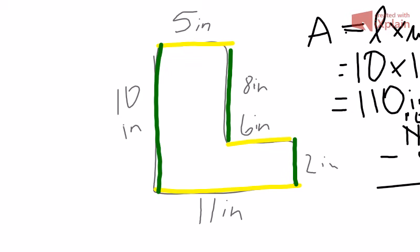Now I'm going to subtract: 10 minus 8 is 2, and 10 minus 4 is 6. So I take 110 and subtract 48, and my total area for this shape is 62 inches squared.